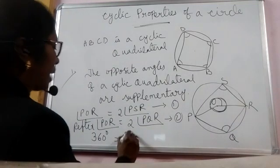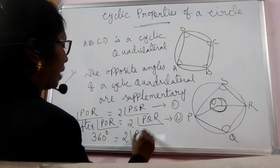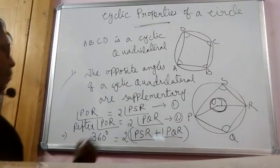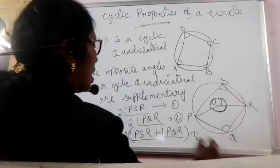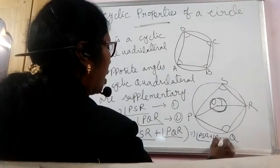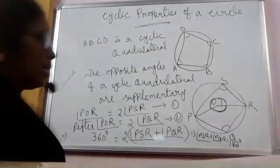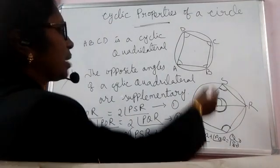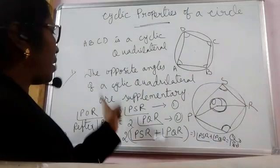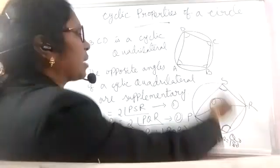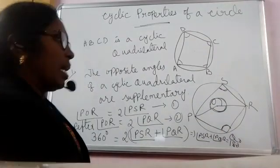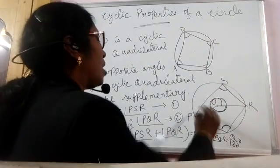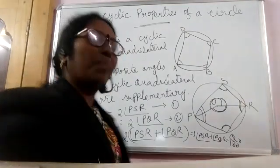360 degrees equals twice of angle P, S, R plus angle P, Q, R — taking 2 as common. Bringing 2 to the other side, we get angle P, S, R plus angle P, Q, R equals 180 degrees. So by this we can say that the opposite angles of a cyclic quadrilateral are supplementary, i.e., the sum of opposite angles of a cyclic quadrilateral is 180 degrees. Since the sum of all four angles is 360 degrees, if one pair sums to 180, the other pair automatically sums to 180 degrees as well.